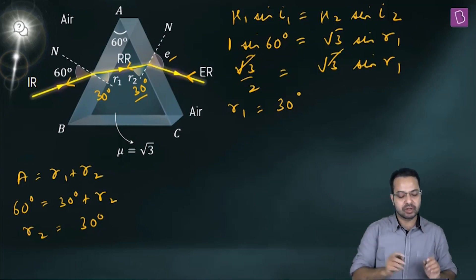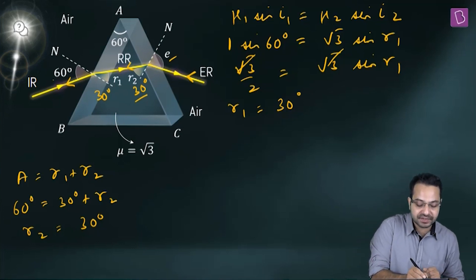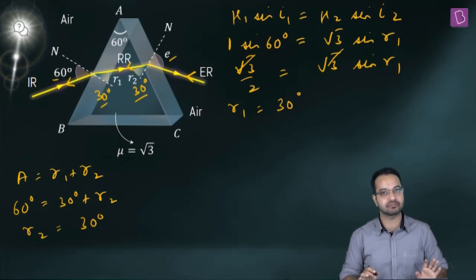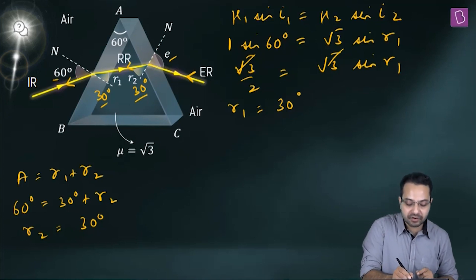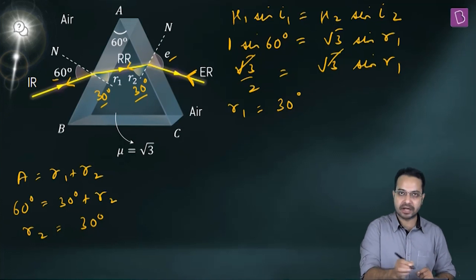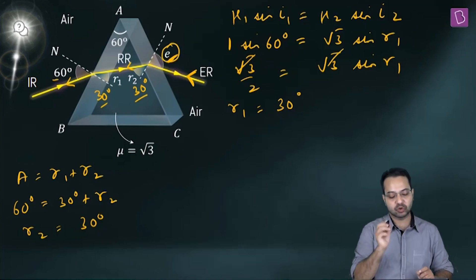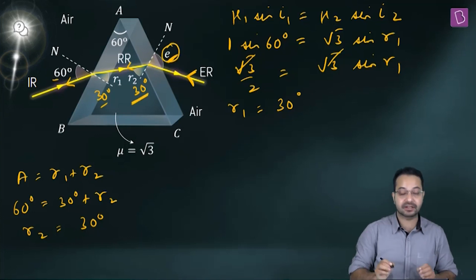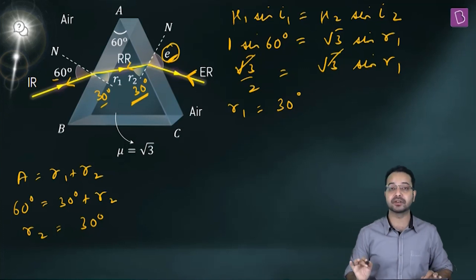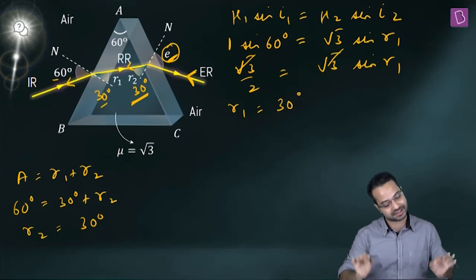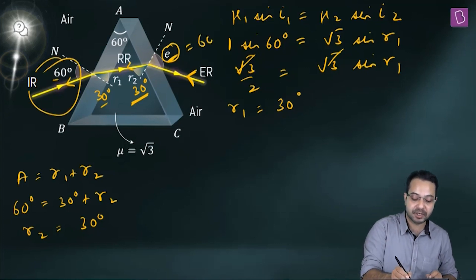How does it help? When going from left to right, angle of incidence was 60° and angle of refraction was 30° — light going from air to prism. In the reverse journey, light is going from prism to air, so what angle of incidence gives angle of refraction of 30°? By the reverse path, we already know the answer: the angle of incidence here has to be equal to 60°.